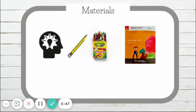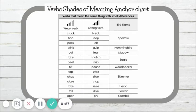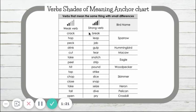Set your materials off to the side because we won't need them until the end of our lesson. During our day three lesson we discussed this verbs shades of meaning anchor chart. On the far side we have all of the birds, then we have verbs that describe what the birds do. For example, a sparrow can break or crack a seed to eat it. Crack and break are similar verbs, but we know that break is stronger because it's on the stronger verb side.